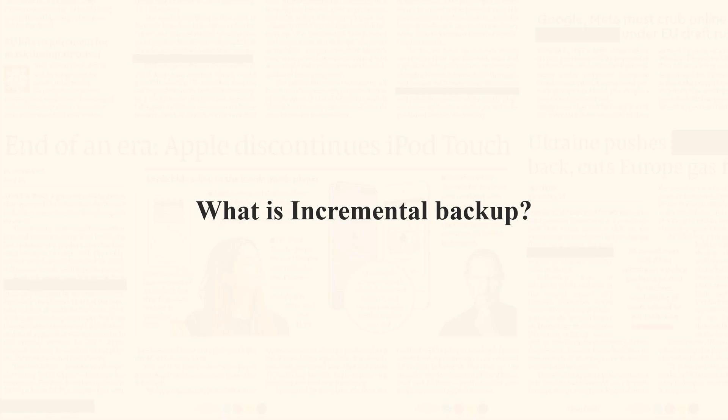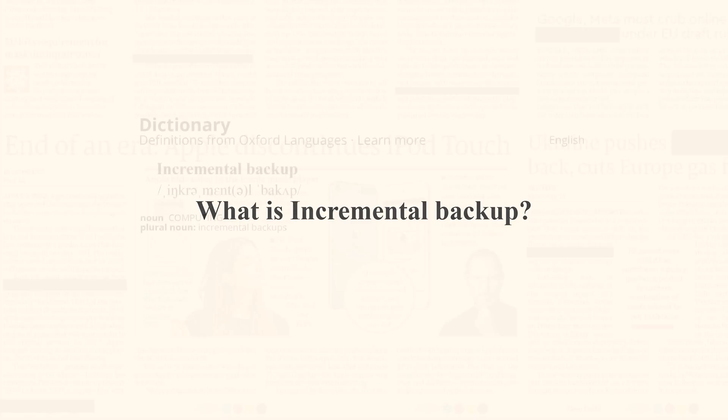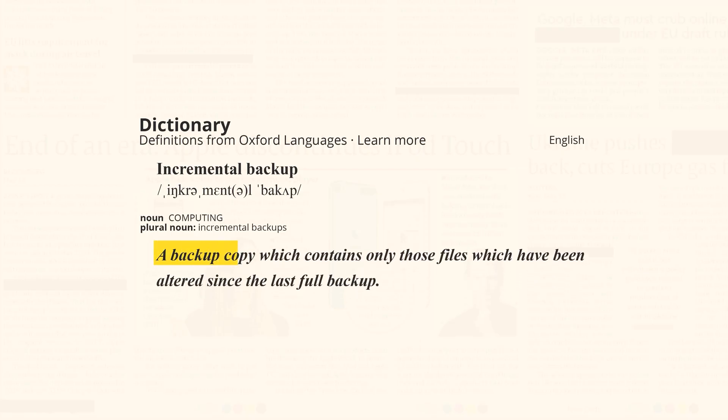What is incremental backup in Oracle Database? Incremental backup is a type of backup which contains only those files that have been altered since the last full backup. Incremental backups can be performed on the entire database, table spaces or data files. In RMAN we perform incremental backups through different levels.